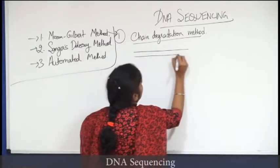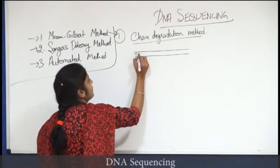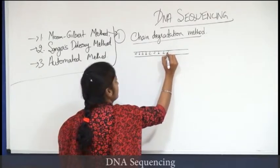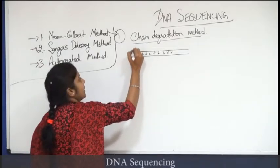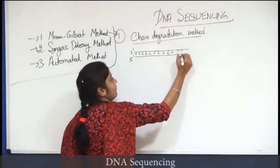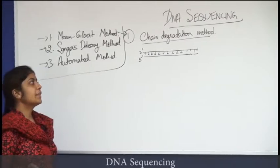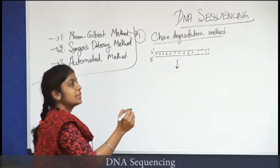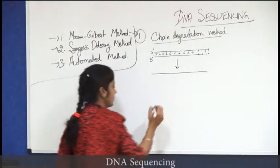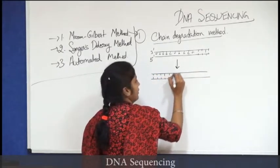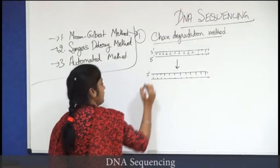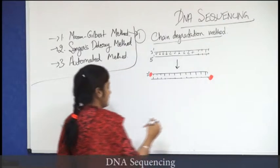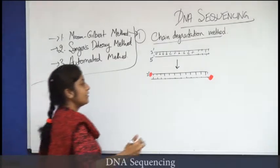Suppose this is the DNA which is to be sequenced. This is the 3 prime and 5 prime end. For sequencing this DNA, we will choose any one of the ends for its labeling. Suppose we have chosen its 3 prime end for labeling. We label its 3 prime end, and at the 3 prime end of both the strands a radioactively labeled dye is added.